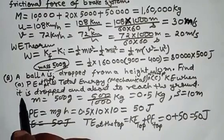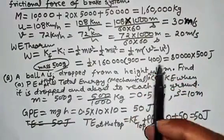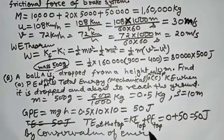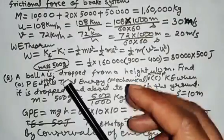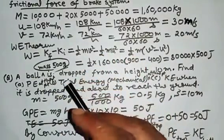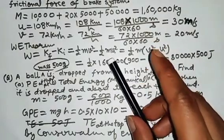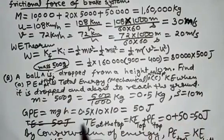When the ball is about to reach the ground, by conservation of energy, its potential energy becomes nearly zero and kinetic energy rises. So all the potential energy at the top converts to kinetic energy at the bottom just before impact. When it strikes the ground, energy is lost as sound and heat. But just before reaching the ground, kinetic energy at the bottom = 50 Joule.